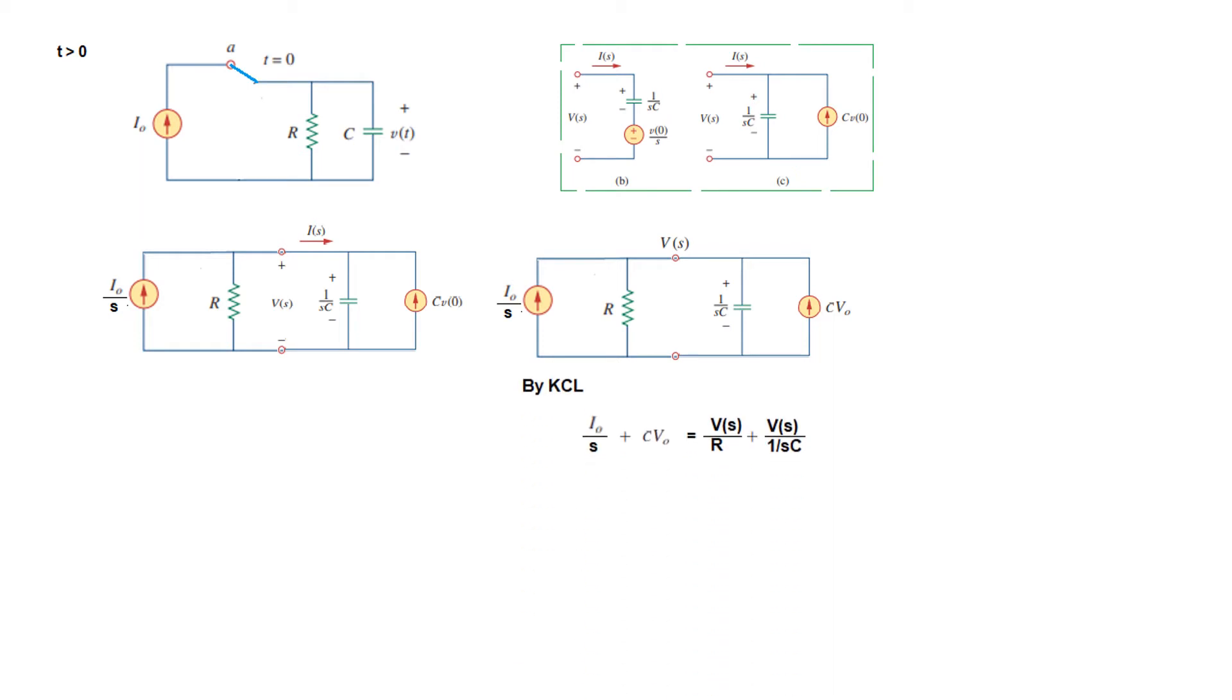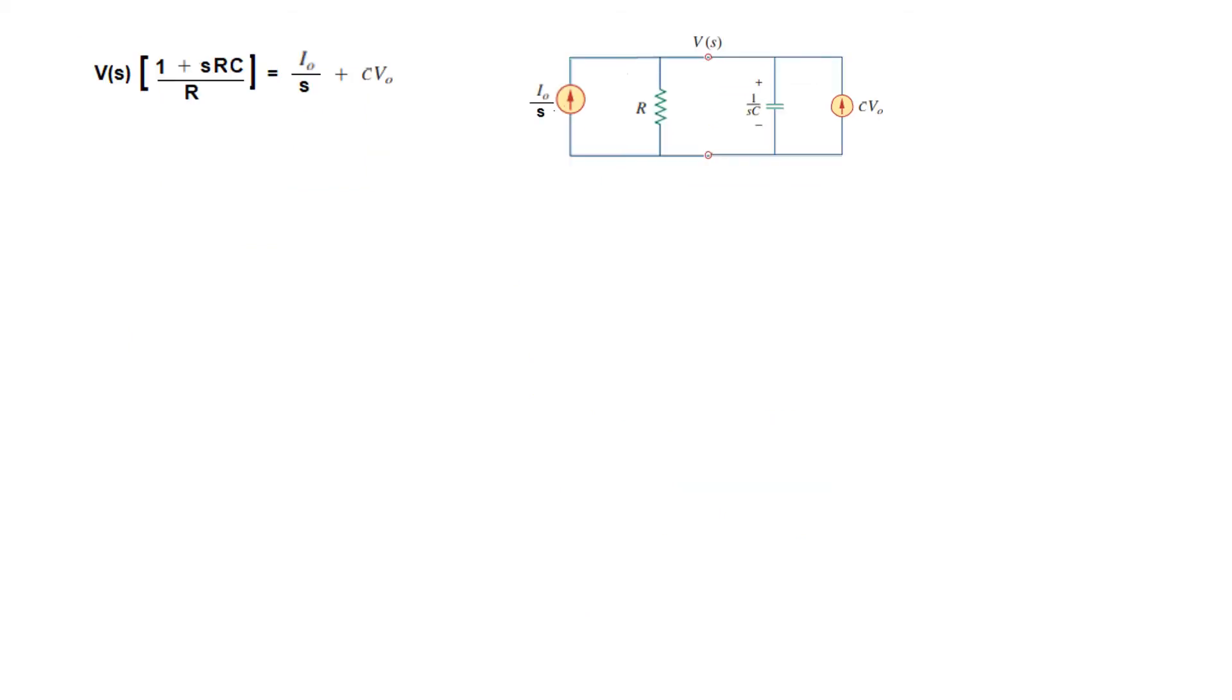By KCL, these two currents are entering and we assume the other currents are leaving. So I0/s plus CV0 equals V(s)/R plus V(s)/(1/sC). From here we change sides and take V(s) times (1/R plus sC).